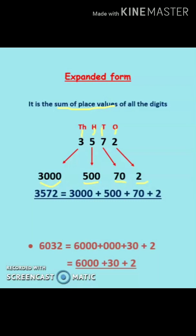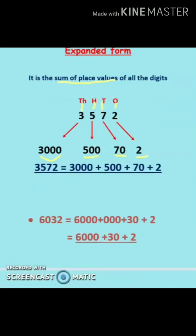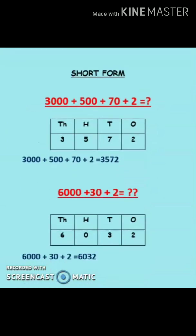Now let's start short form. Short form is the reciprocal of expanded form. In expanded form, we have to write the place value of all the digits. Whereas in short form, the place values of all the digits are given and we have to write the number.